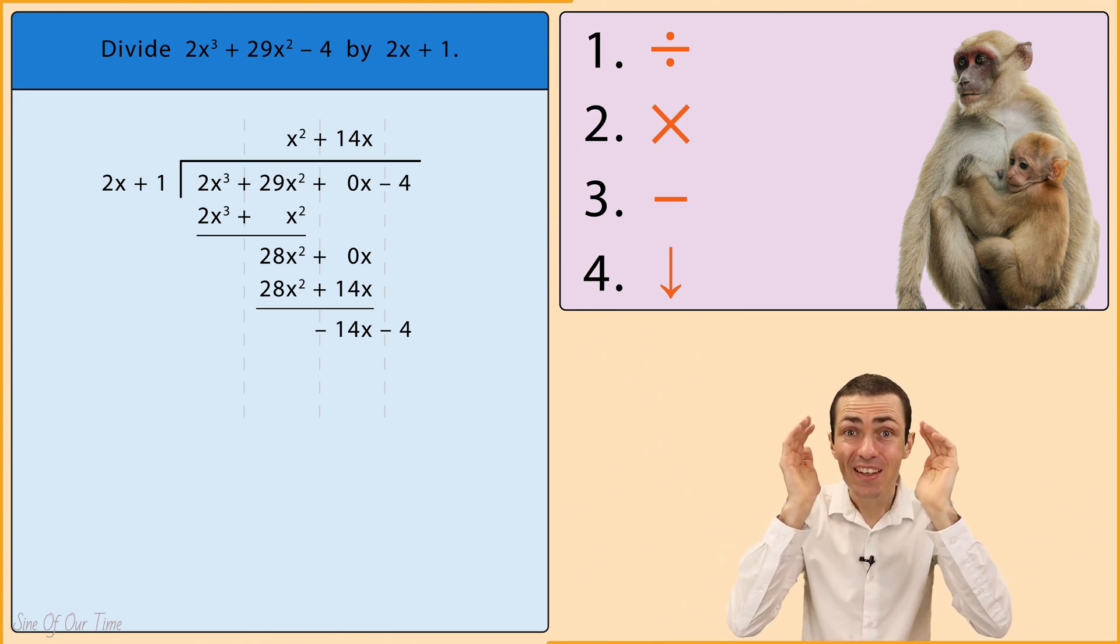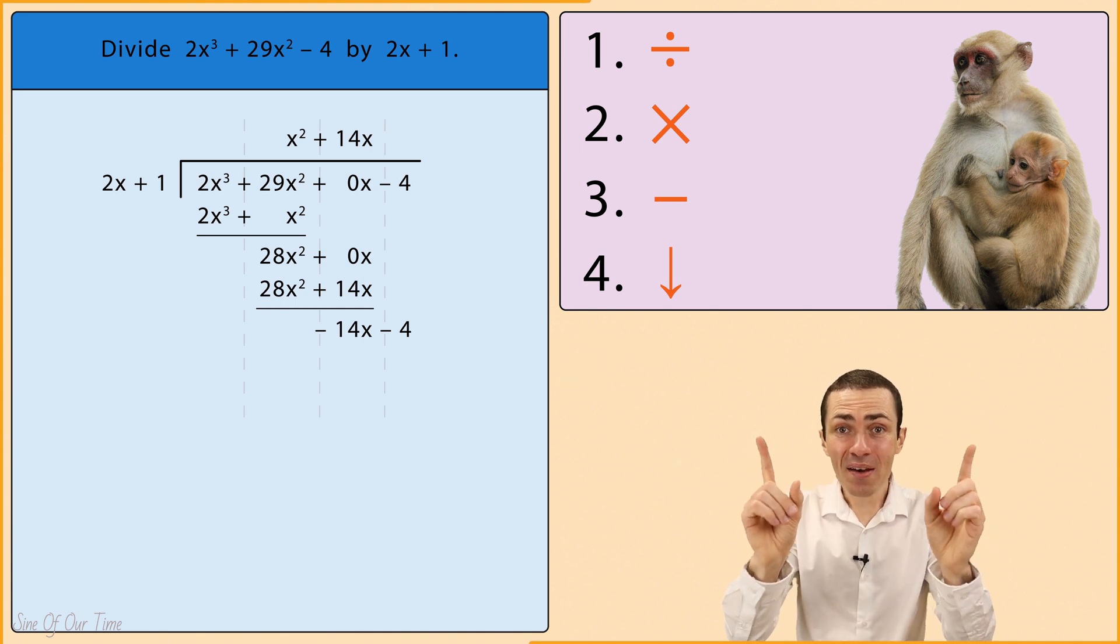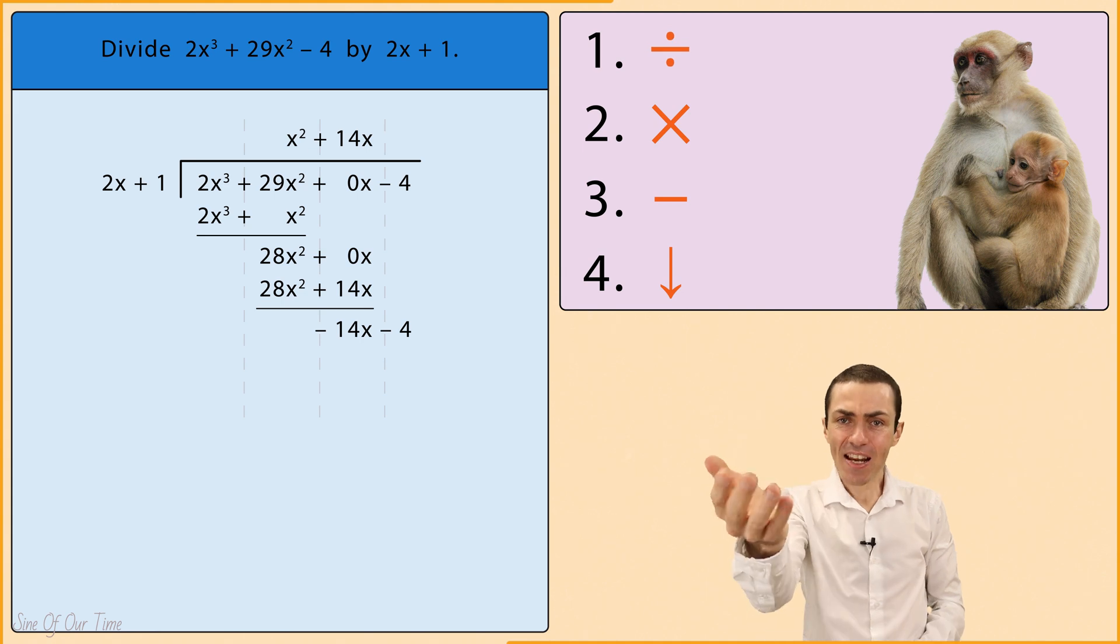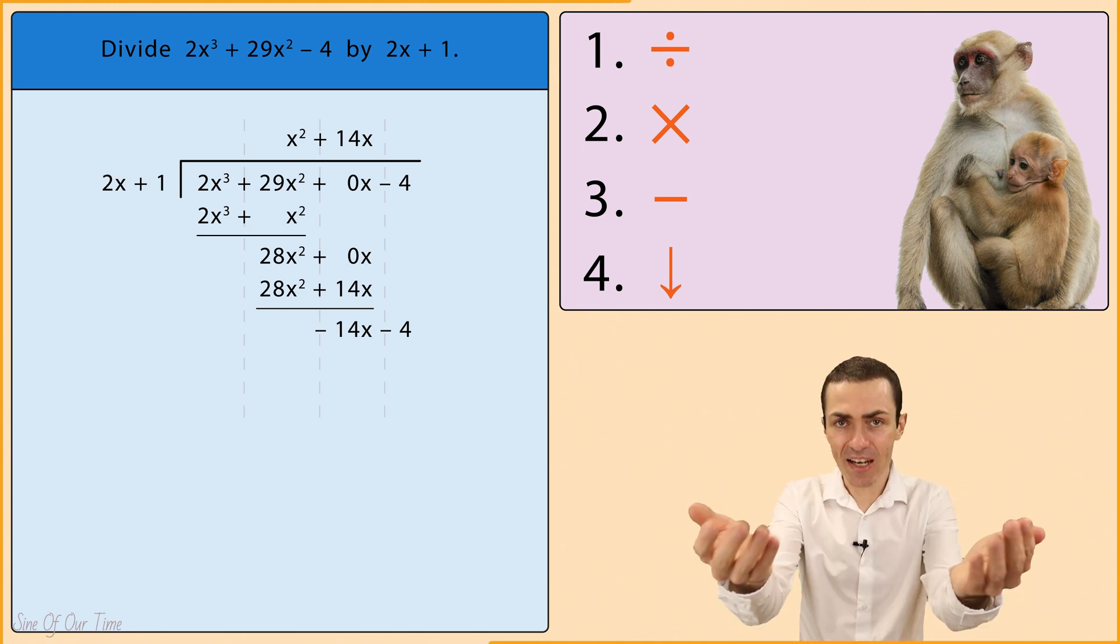If you thought we were done, think again. We actually have to follow these steps one more time. So let's do it. Step 1: Divide. Negative 14x divided by 2x gives us negative 7.